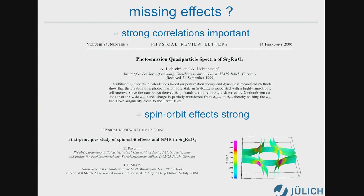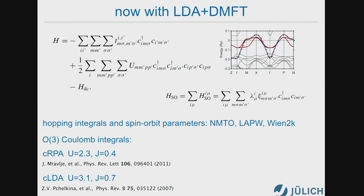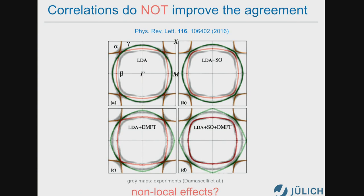Now that we had the means of studying this problem with LDA plus DMFT, we looked at it with this approach. The model being solved is a tight-binding-like model constructed from Wien2k for the T2G bands, with local Coulomb interaction and spin-orbit interaction whose largest term is the local term. The result we obtained is collected in this picture.